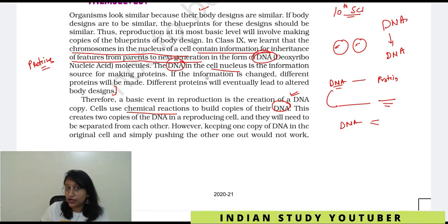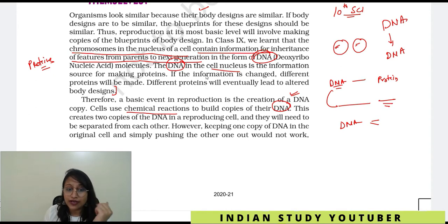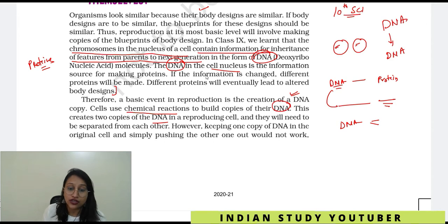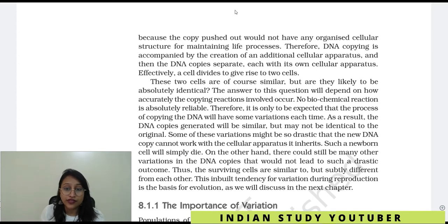DNA replication is the whole event. We don't need a lot of detail about replication. What happens is: two copies of DNA are created in a reproducing cell, and they need to be separated from each other. However, keeping one copy of DNA in the original cell and simply pushing the other one out would not work, because the copy pushed out would not have any organized cellular structure for maintaining life processes.